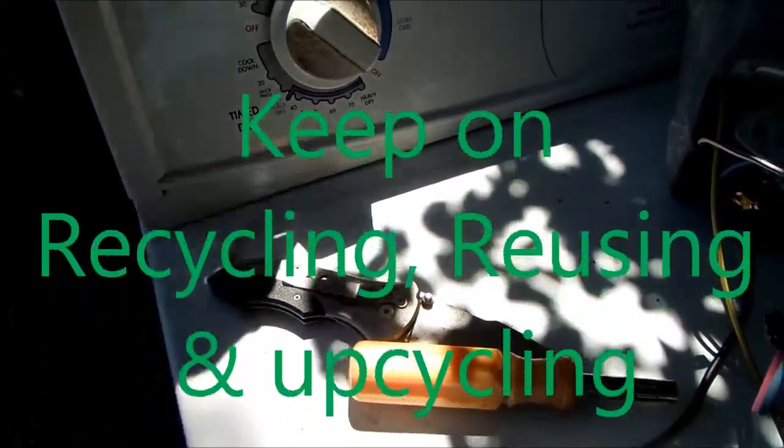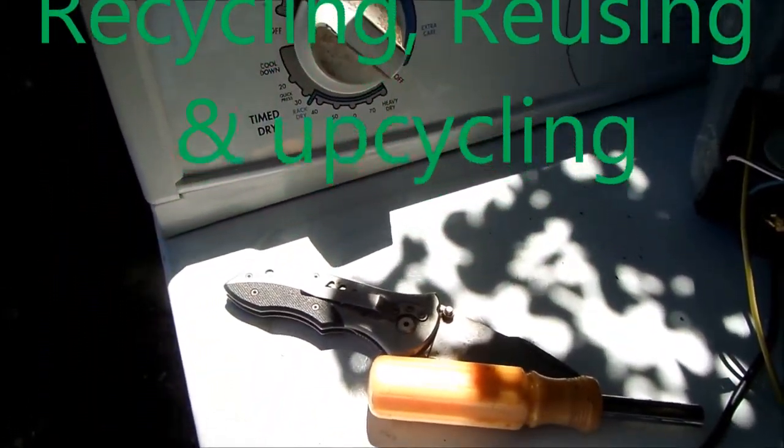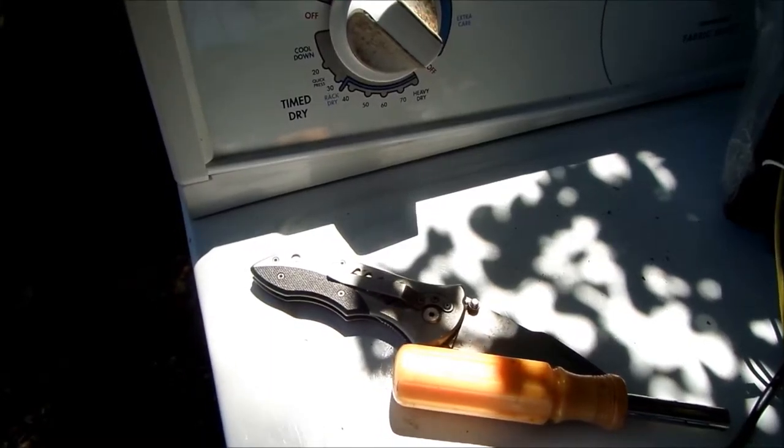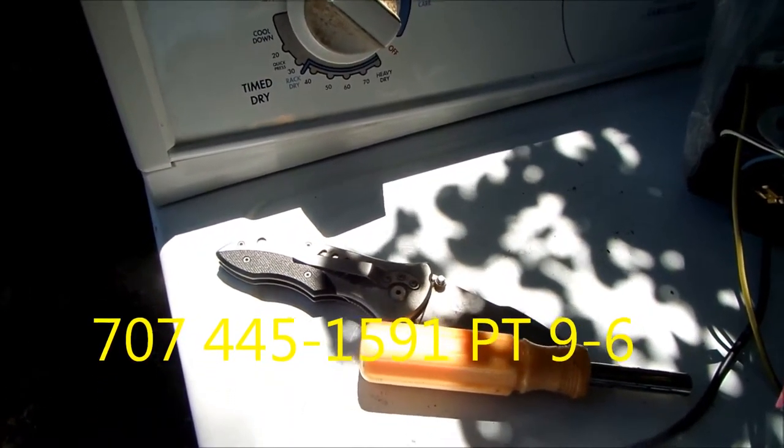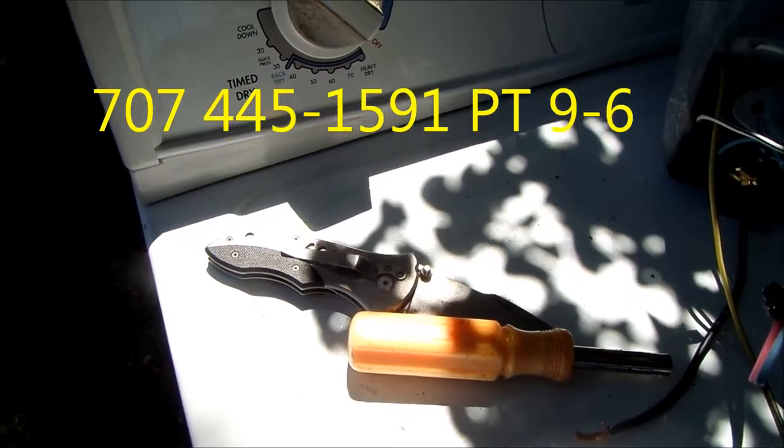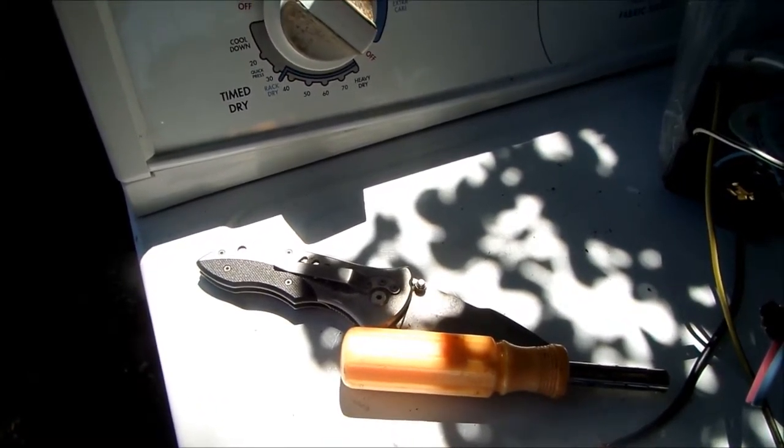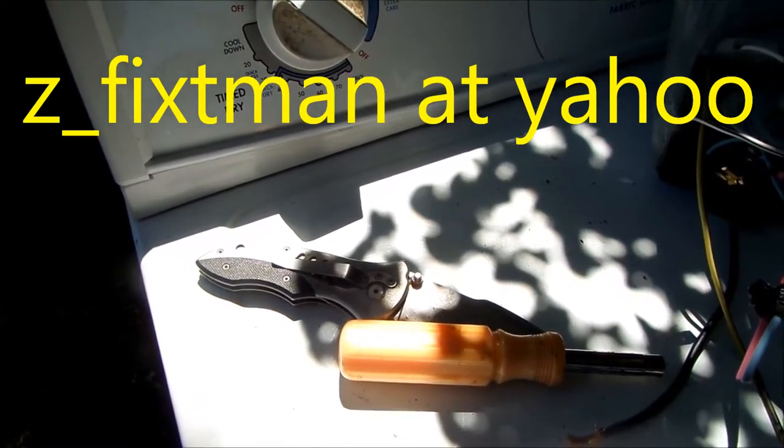If you need any help, you can also contact me 707-445-1591 and or send me an email z underscore fixitman at yahoo.com. Thank you.